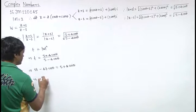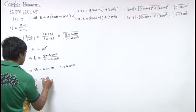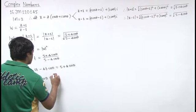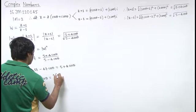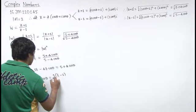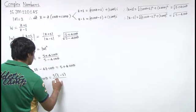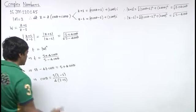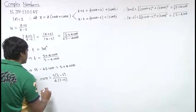Cross multiply: 5t minus 4t cos theta equals 5 plus 4 cos theta. So from here, the value of cos theta will be 5t minus 5 upon 4t plus 4. Now cos theta lies between minus 1 and 1, so we use this.